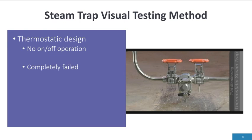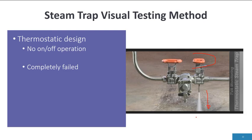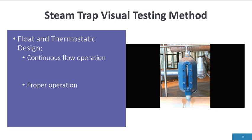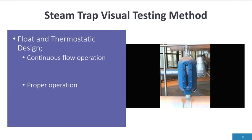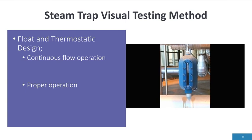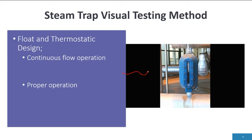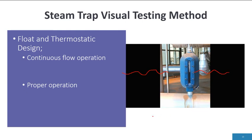A thermostatic design steam trap should show on-off operation, or if completely failed, it will stay open. As the handle is activated, you'll see the discharge — it never shuts off, completely failed, blowing through. This type of steam trap does not have a distinct on-off operation in all cases, so continuous flow can also represent proper operation. This happens to be another type of visual indication, which is a sight glass inside the steam trap body.